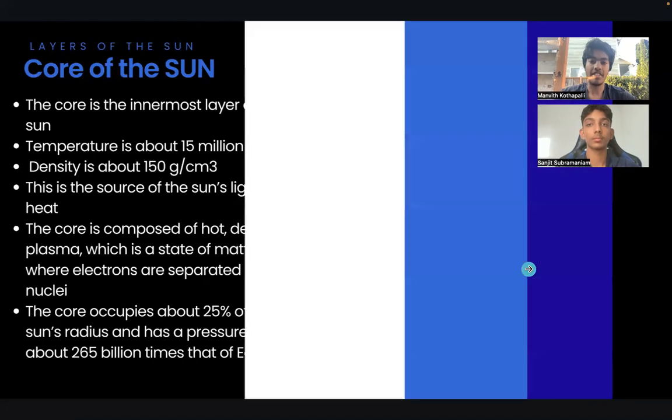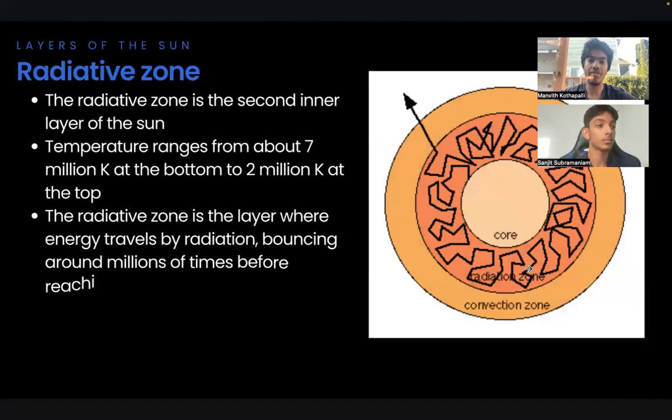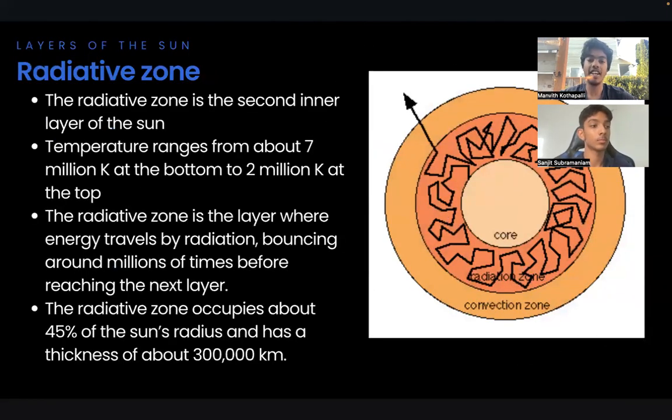Now, let's talk about the next layer of the Sun, the radiative zone. The radiative zone is the second inner layer of the Sun, where the temperature ranges from about 7 million Kelvin at the bottom to 2 million Kelvin at the top. The density ranges from about 20 grams per cubic centimeter at the bottom and 0.2 grams per cubic centimeter at the top.